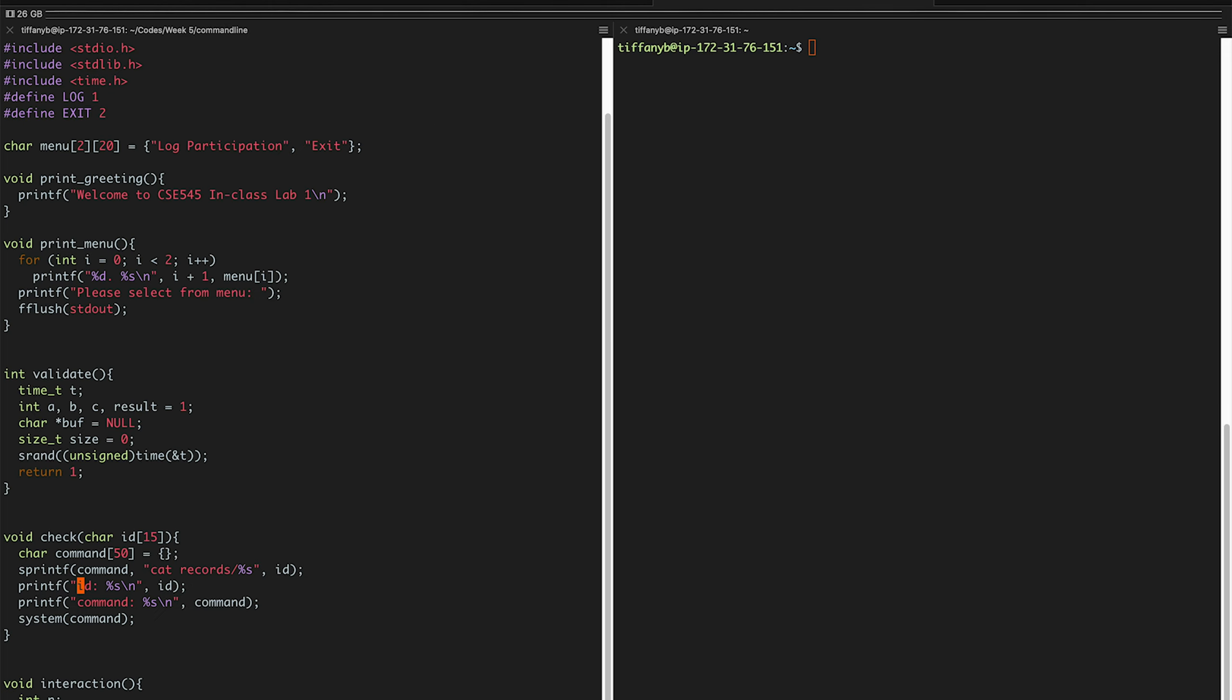And for the service, it calls the check function, and then the check function is going to read a file from the records directory.